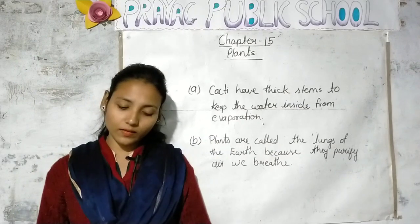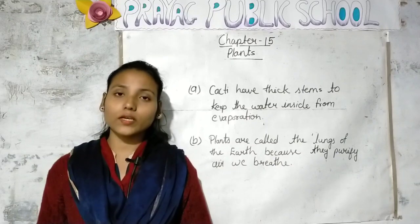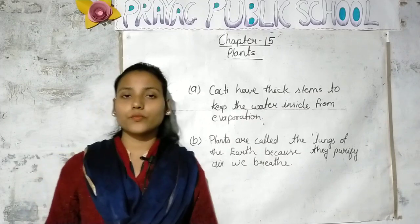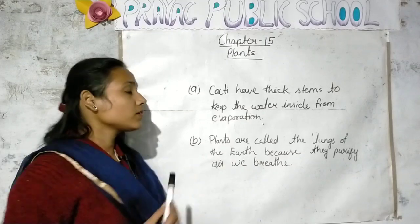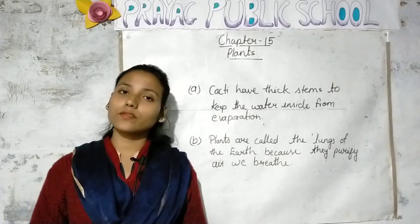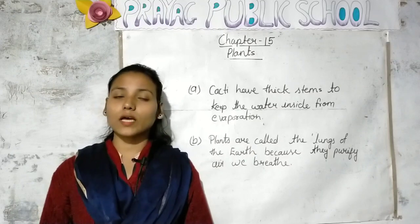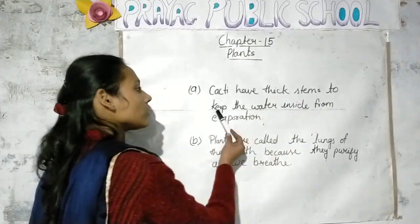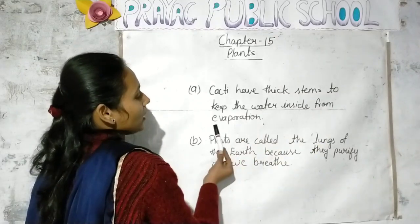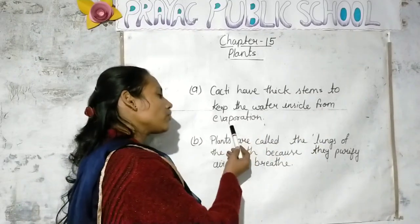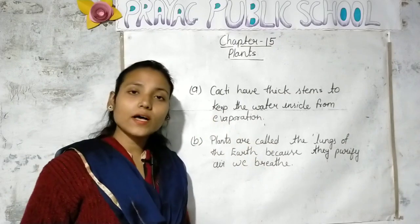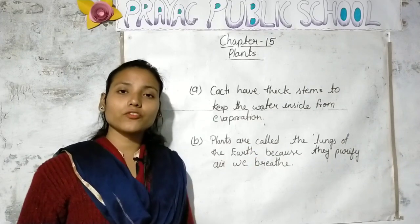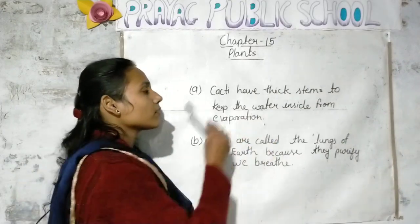Our next exercise is: Discuss the reasons for the following statements. There are two statements given here and you need to provide a reason for each. First statement: Cacti have thick stems. The answer is: Cacti have thick stems to keep water inside and protect it from evaporation — that is, to prevent the process of evaporation and to safely store water within the stems.